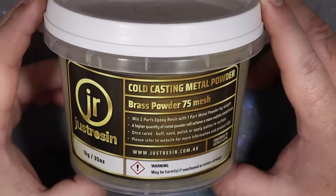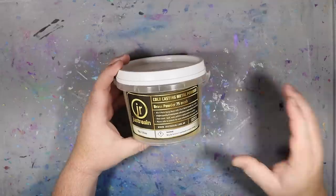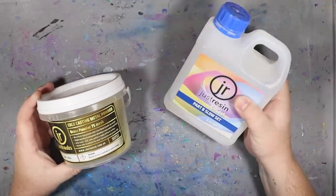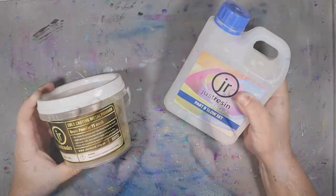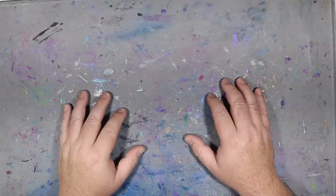The powder I'll be using is a brass powder. It's mixed at a ratio of two parts resin to one part powder. The resin I'll be using for that is Art Cast slow set. Since I'm new to all this, I'm sure I'm gonna make a few mistakes, and if I do please let me know.